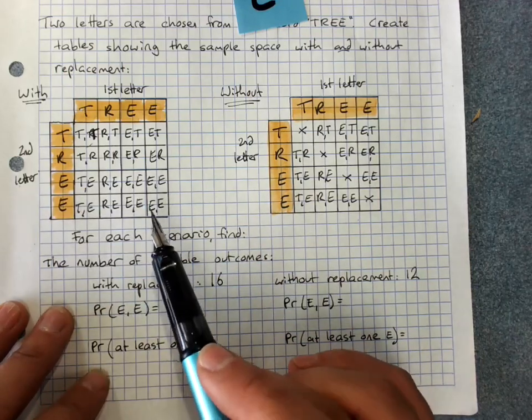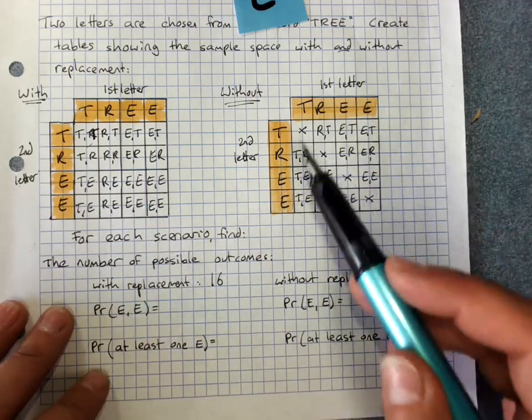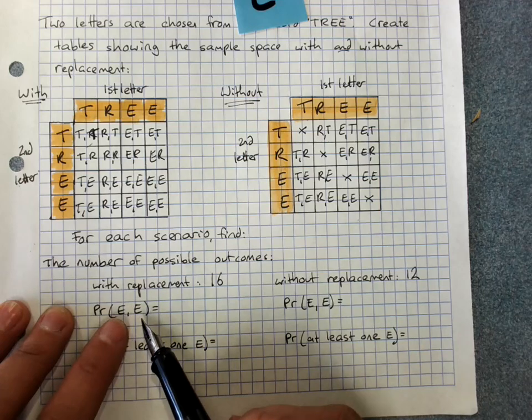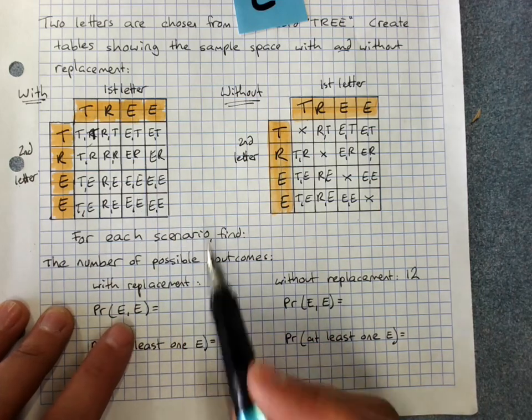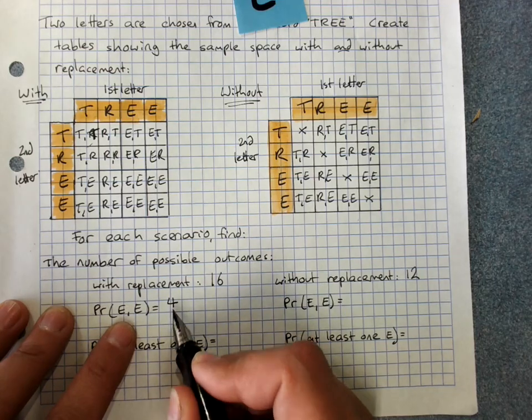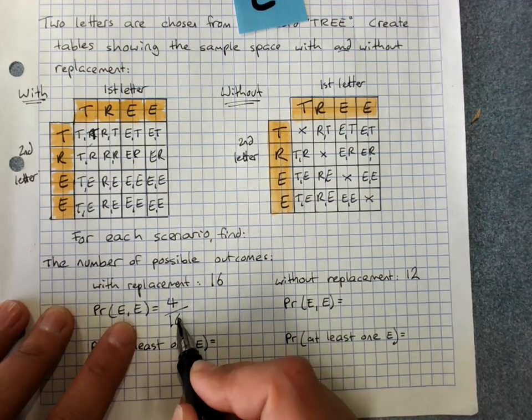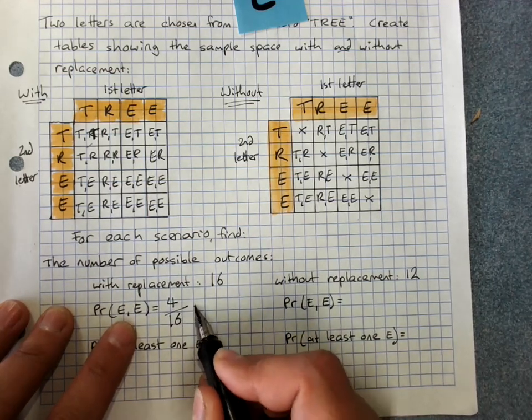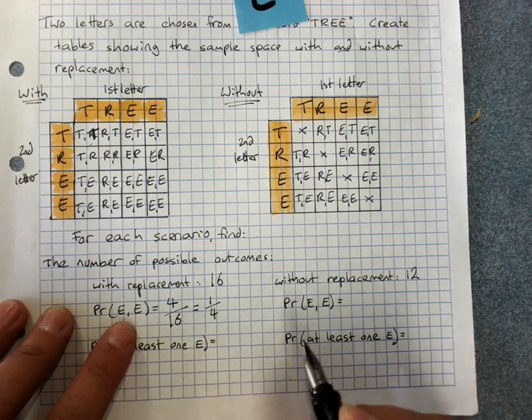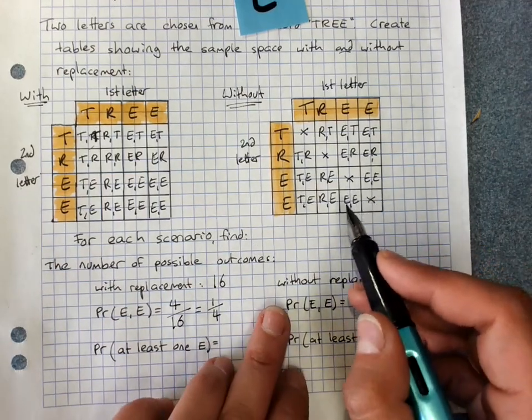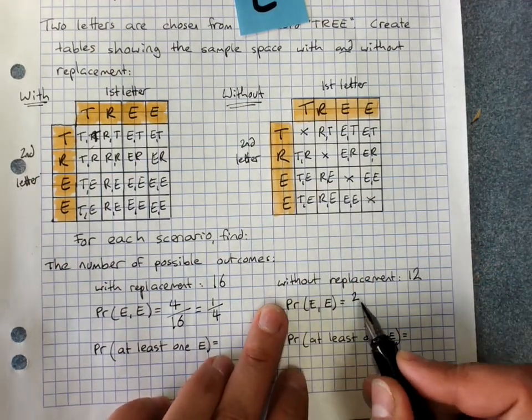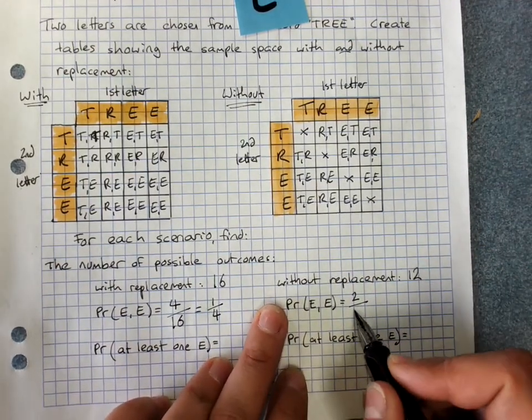The number of outcomes in the first event times the number of outcomes in the second event gives me the total number of possible outcomes. For finding probability we can just count up the number of successful outcomes from the table. The probability of getting two E's, there's 1, 2, 3, 4 where I can get two E's out of a total of sixteen. You always simplify your fractions, so that's one quarter.